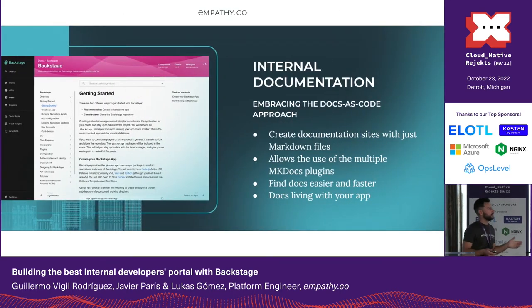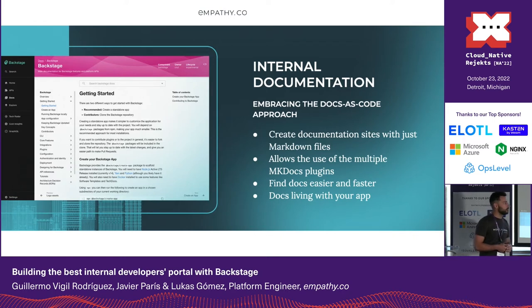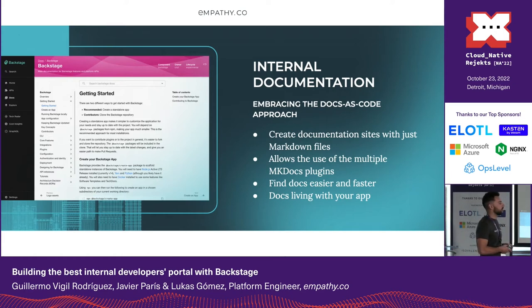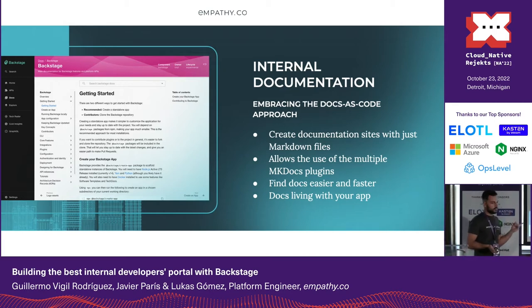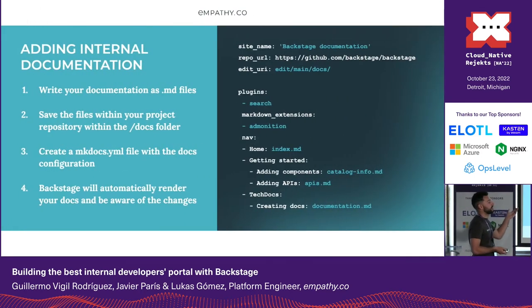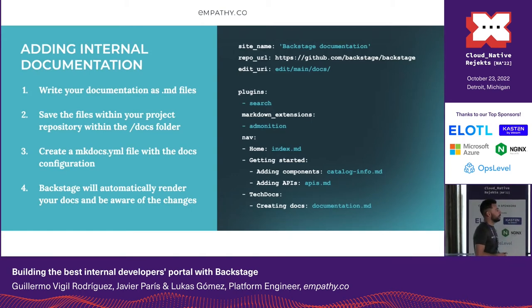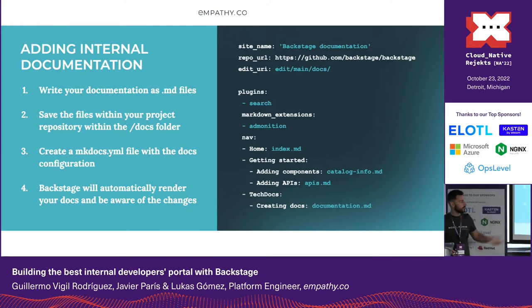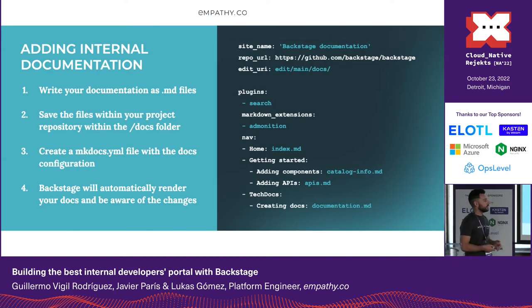For documentation, Backstage uses a docs-as-code approach. Just create your documentation as Markdown files, and you can also use an incredible set of mkdocs plugins. To add documentation, just create a couple of files in a docs folder in your GitHub repository, then create an mkdocs.yml file with your settings and navigation. Backstage will render your page automatically and it's always updated.